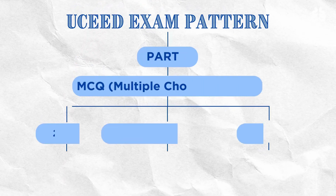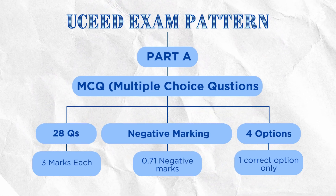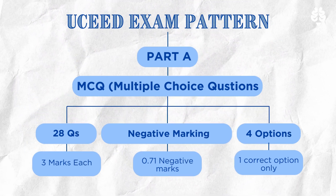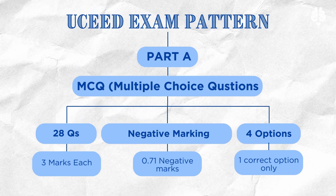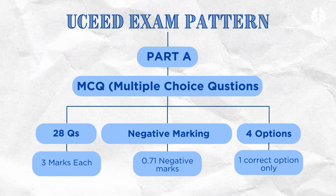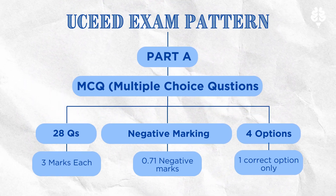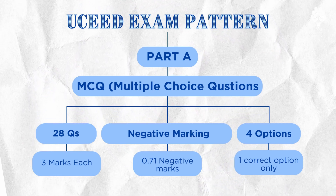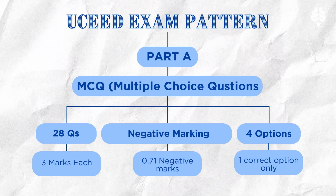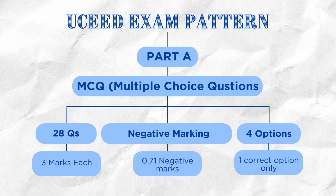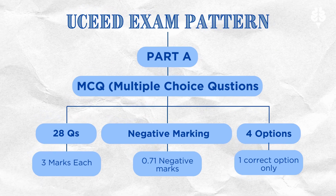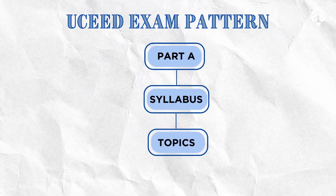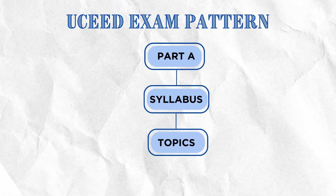The third section is MCQ, Multiple Choice Question. This section has 28 questions, three marks each for a correct answer and 0.71 negative marks for incorrect answers. Each MCQ will have four choices, out of which only one is the correct answer. Part A will have questions from the following topics.